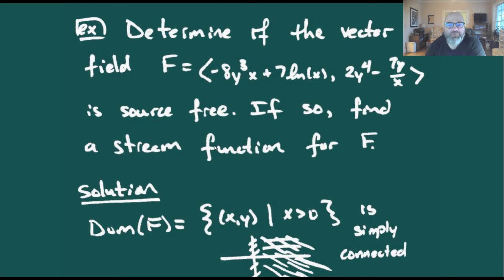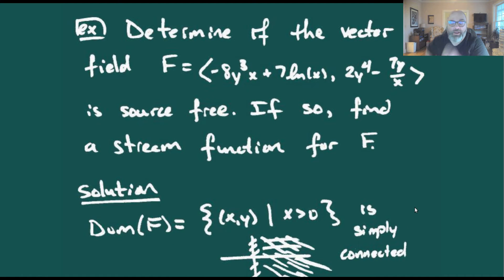Well, if we look at the domain of that vector field, the only things we really have to worry about are we've got an x in the denominator and an x as the argument of a natural log. So for the domain, we just need our x's to be positive, which gives us the right half plane, and that is a simply connected region — we don't have any holes in that one.